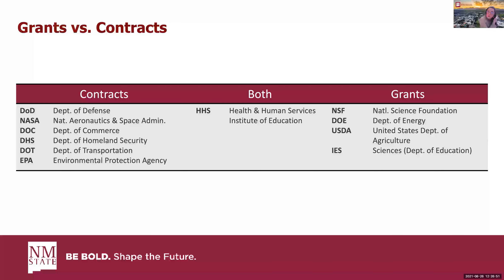Which agencies participate in which vehicle: contracting agencies are DOD, NASA, DOC, DHS, DOT, and EPA. The only agency that participates in both is HHS. On the granting side, you've got NSF, DOE, USDA, and IES, which is the Department of Education.